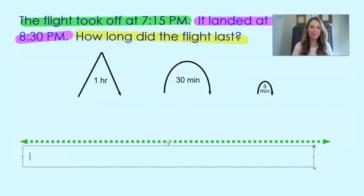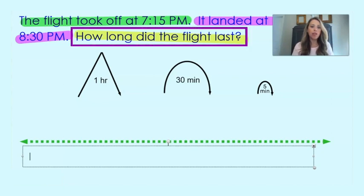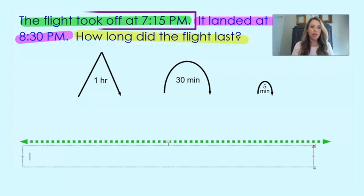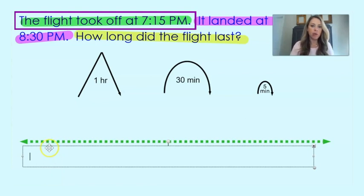In our first lesson, we already determined that for the first problem in our notebook, we are trying to find how long the flight lasted. We know that the flight took off at 7:15pm, so I'm going to go ahead and record my start time on the number line.